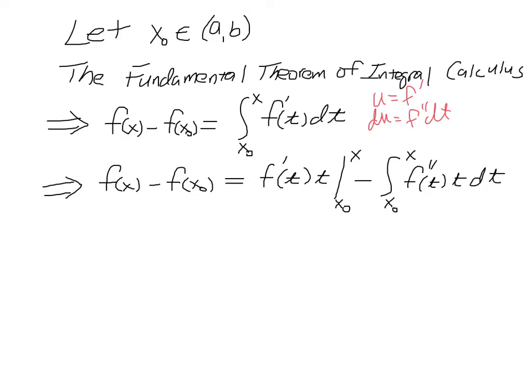And then I'll let dv equal dt - whoops, I got to get a d in there somehow - and then v will equal t. And you see that here and here, so we'll have uv minus the integral of v du.